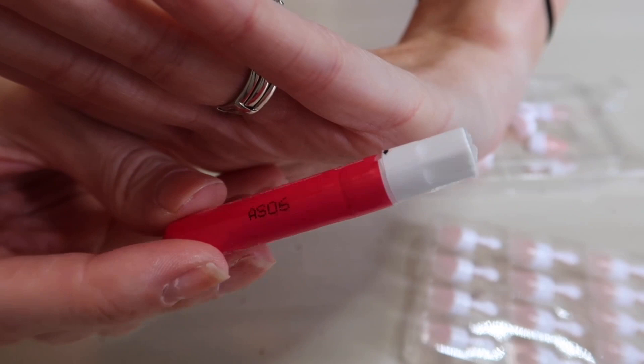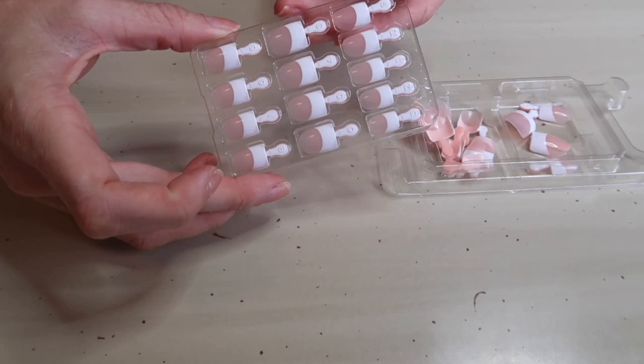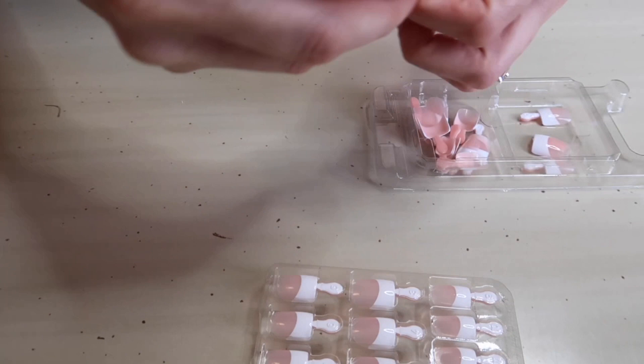So what comes in this nail kit will be your glue, your cuticle stick, and then also your two-sided nail file. So you don't have to worry about running out and getting anything. And I got these from Amazon, so I will link them down below so that you guys can get them too.